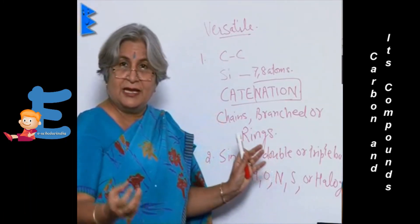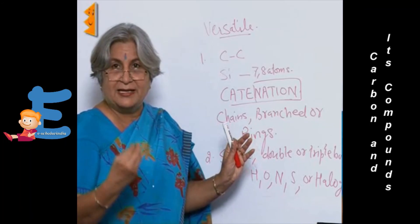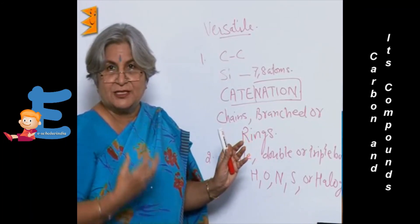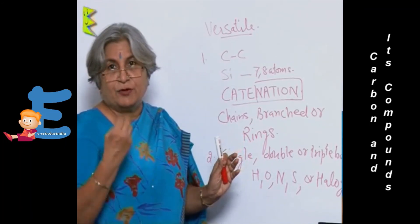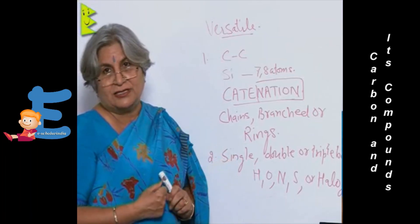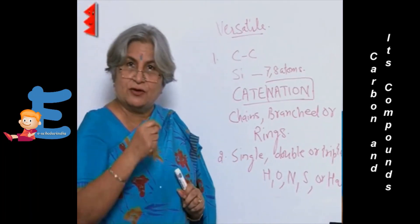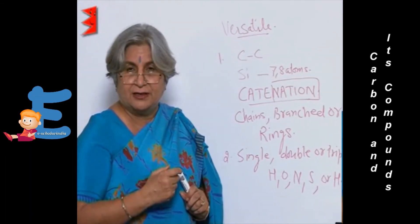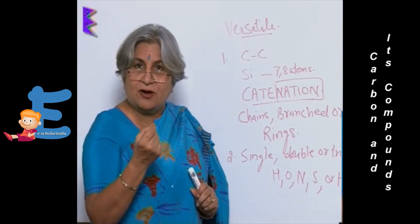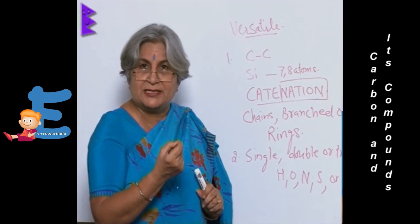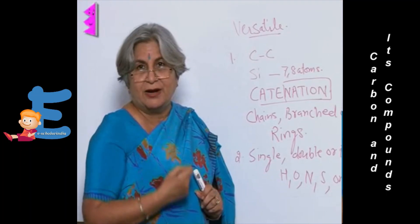So here also, these outside atoms come and they bring in their own properties, specific properties. Like protein has nitrogen or sulfur along with of course carbon, hydrogen, and oxygen. While hydrogen and oxygen along with carbon is present in fats or carbohydrates.